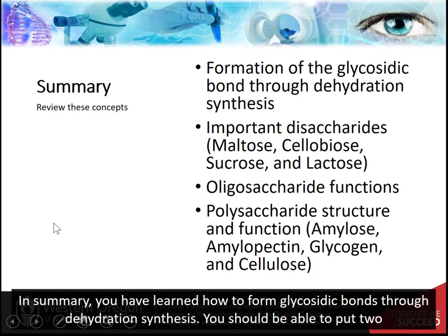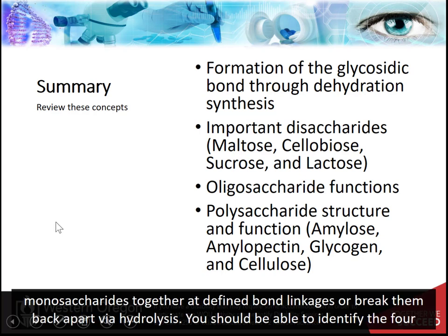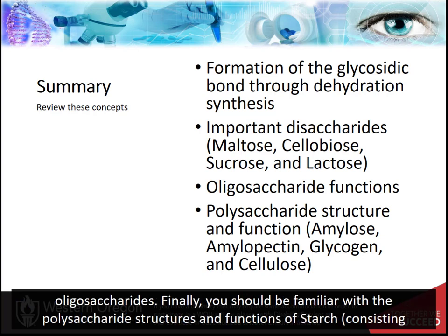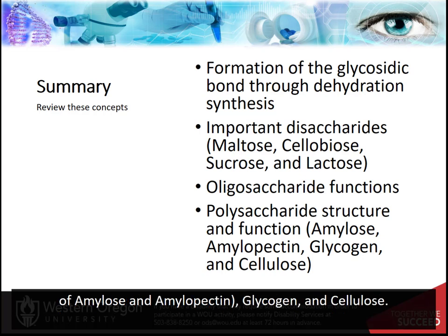In summary, you've learned how to form glycosidic bonds through dehydration synthesis, and should be able to put two monosaccharides together at defined bond linkages or break them apart via hydrolysis. You should be able to identify the four important disaccharides — maltose, cellobiose, lactose, and sucrose — and describe the major functions of oligosaccharides. Finally, you should be familiar with polysaccharide structures and functions of starch (amylose and amylopectin), glycogen, and cellulose.